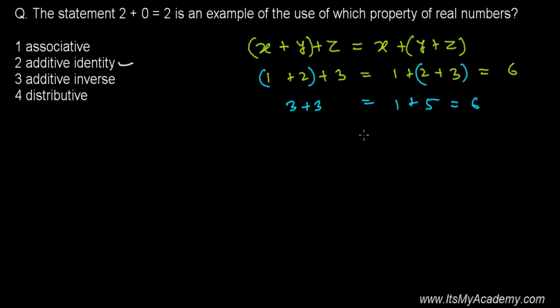This is associative. And additive identity: how we have learned it is if x + 0 then x + 0 equals x, and the same thing is actually 0 + x. In the same format, 2 + 0 equals 2.